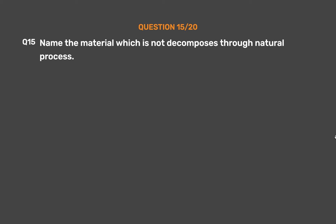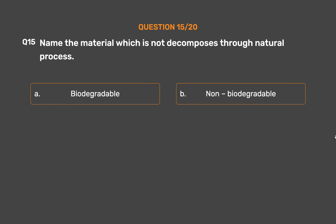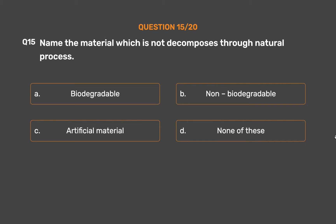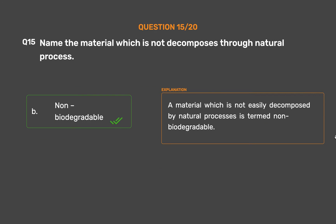Question Number 15. Name the material which is not decomposed through natural processes. Option A: Biodegradable. Option B: Non-biodegradable. Option C: Artificial material. Option D: None of these. The correct answer is Option B: Non-biodegradable. A material which is not easily decomposed by natural processes is termed non-biodegradable.